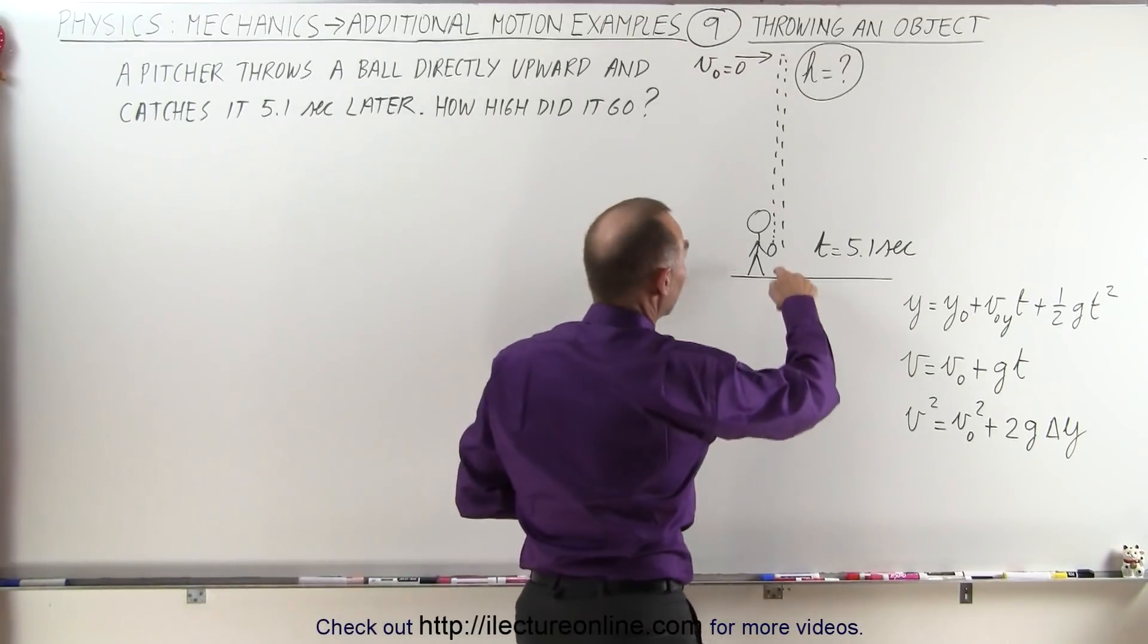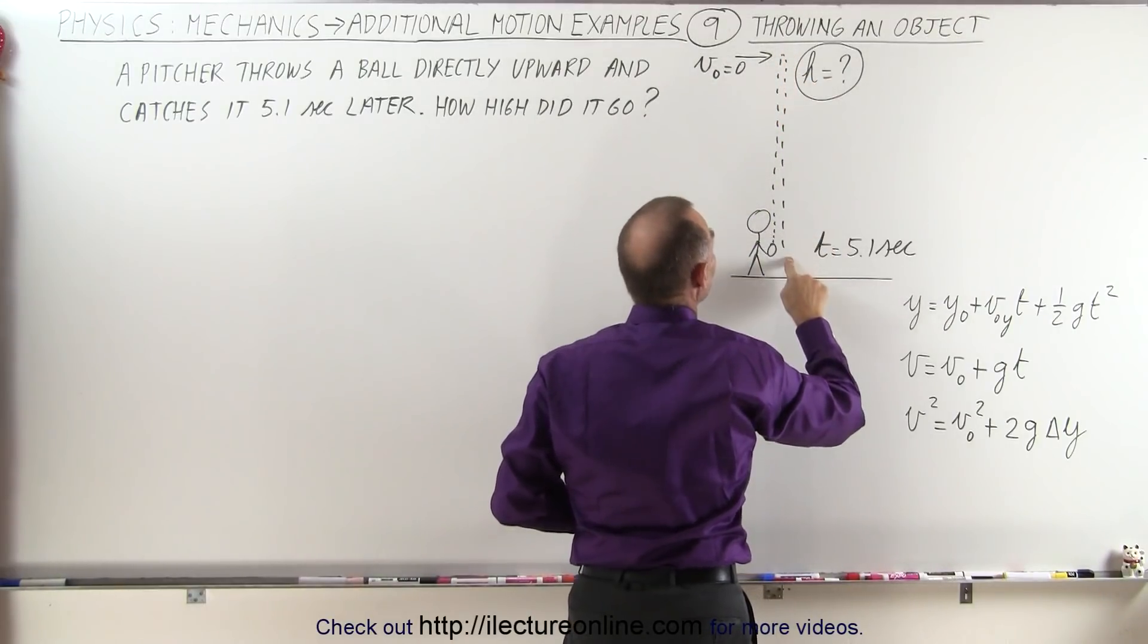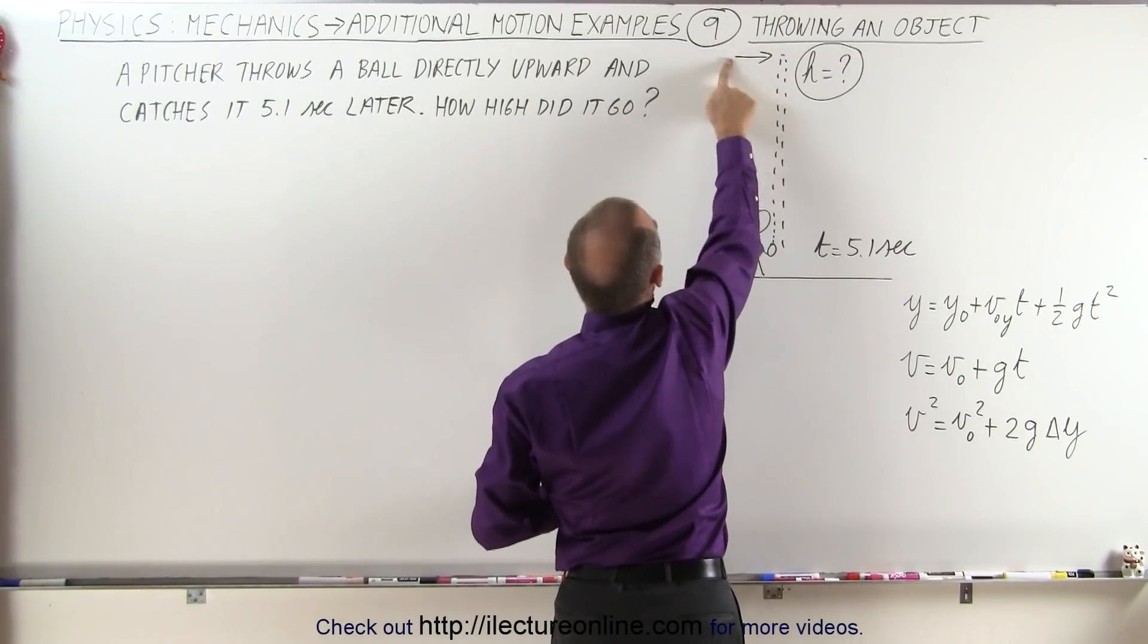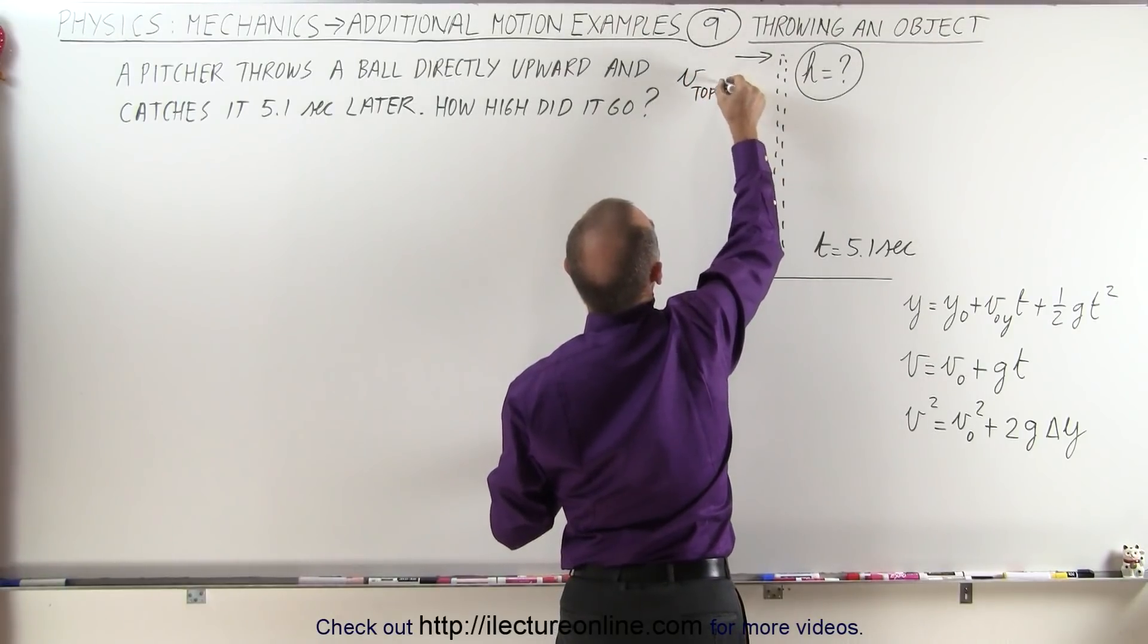Let's assume here that he throws the ball straight up, reaches maximum height, comes back down. We realize of course at the top here the velocity will be zero, and maybe I should simply write v at the top, makes more sense, so v at the top will be equal to zero.